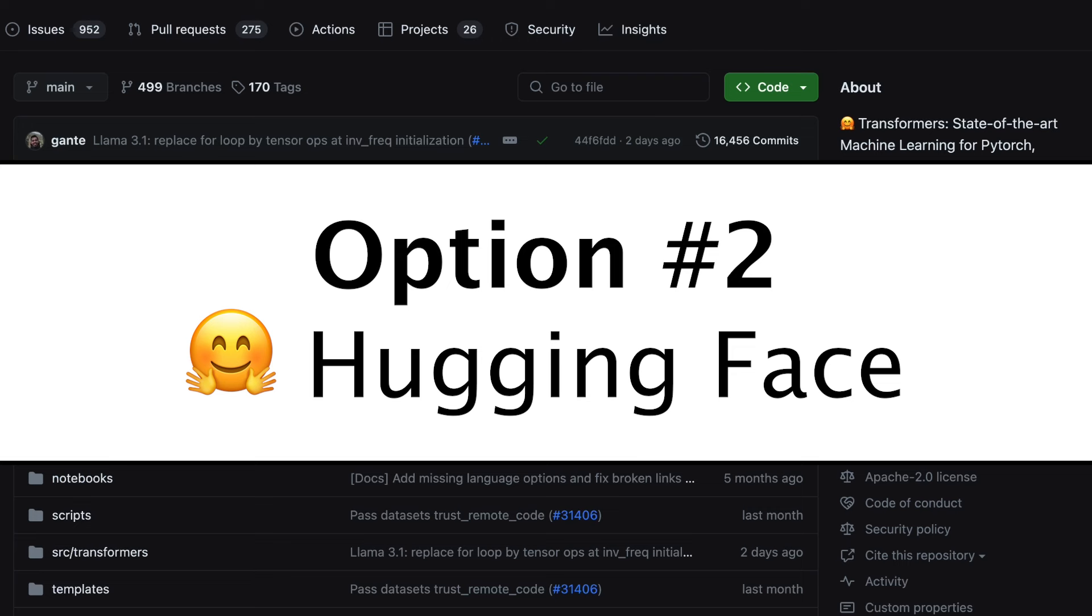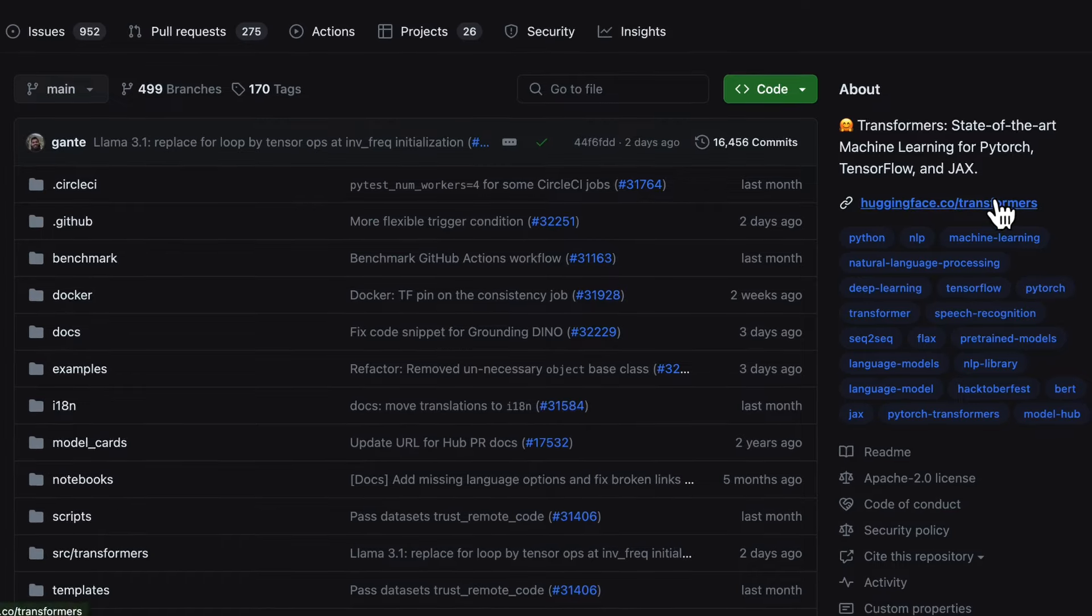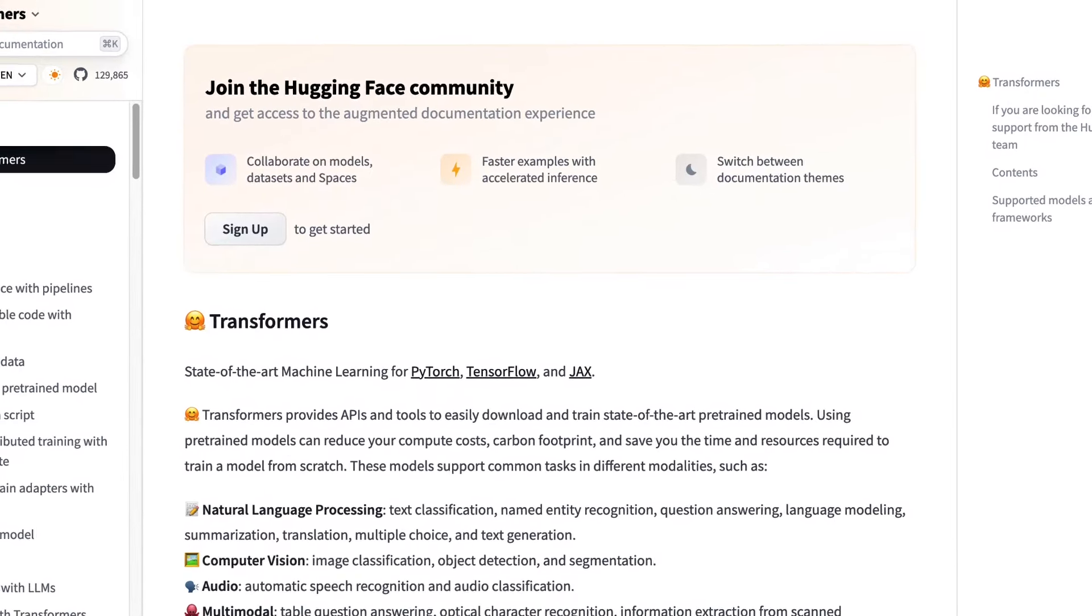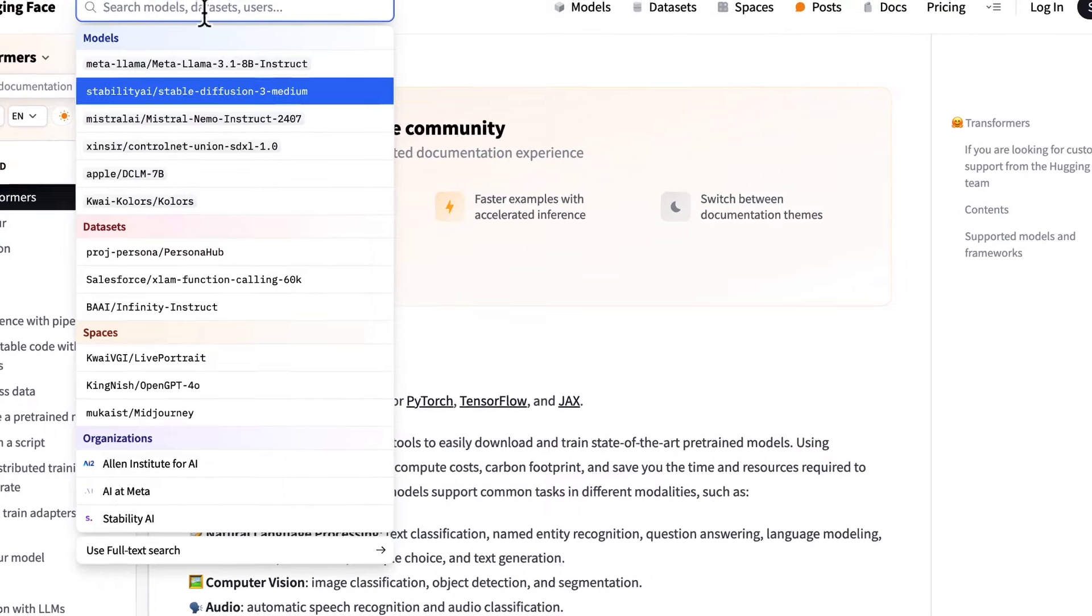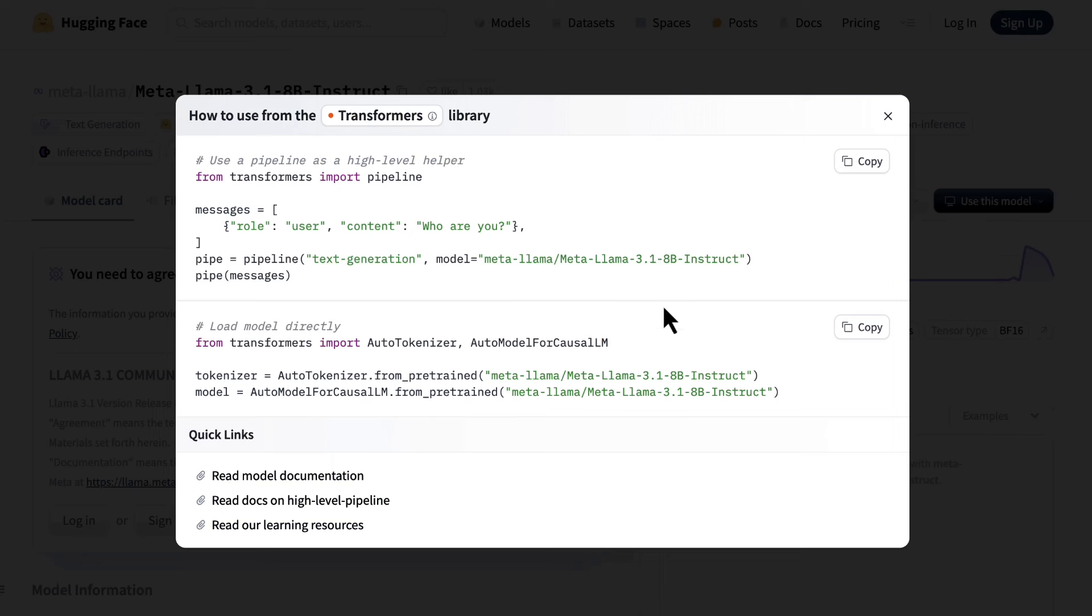Option number two is going to be Hugging Face. Hugging Face is an open source platform where PyTorch developers, as well as developers from other machine learning framework ecosystems, will publish their models for everybody to use for free. Most people are not going to be interested in building their own AI model, but they might be intrigued to see if the ecosystem provides a model they can use for their use case. If that's the case, you can come over to Hugging Face's website, search for models in the search bar right here, and once you find a model you're interested in, you can host it with just a few clicks, and Hugging Face even gives you the Python code for you to copy into your projects so that you can connect your applications directly with the model.